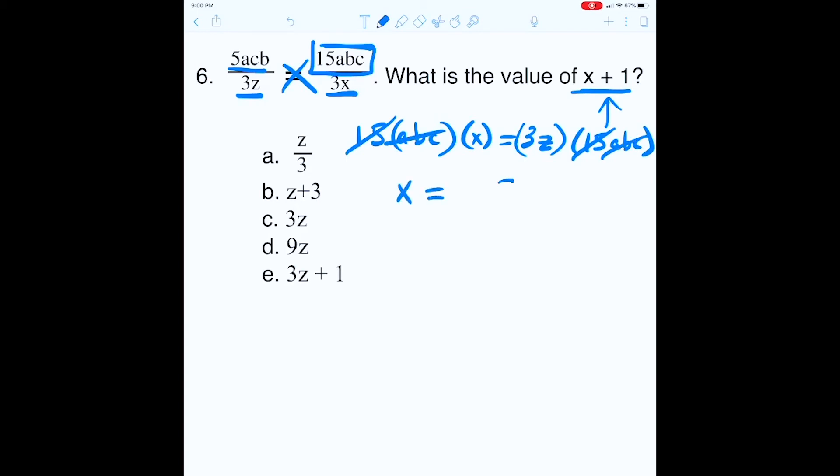x equals 3z. We're looking for x plus one. So make sure you do whatever you're going to do to both sides of the equation. Add one to both sides. x plus one equals 3z plus one. Answer choice E.